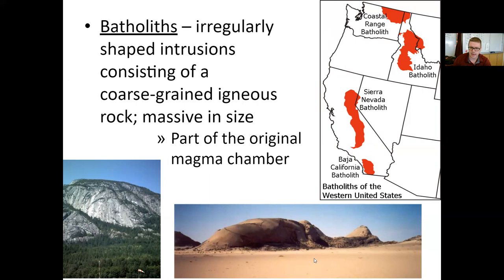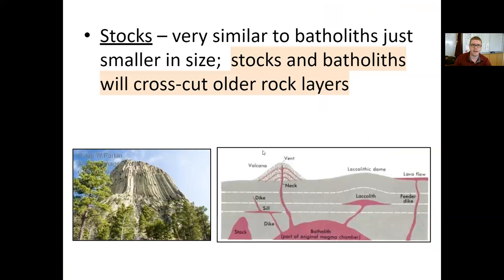That leaves us with these really fantastic-looking massive rock structures at the surface. These uplifted areas of igneous rock were once part of massive magma chambers deep under the Earth's surface. So batholith — massive, irregularly shaped intrusions. Similar to a batholith is a stock; they're just smaller in size. Both stocks and batholiths cross-cut older rock layers. As we saw in the previous slide, a stock is a much more narrow feature — very tall, almost looks like a mountain, but again, it was formed underground.